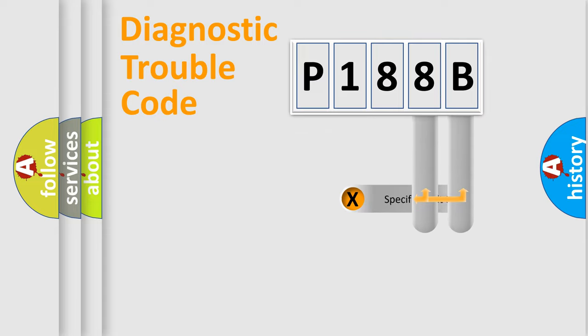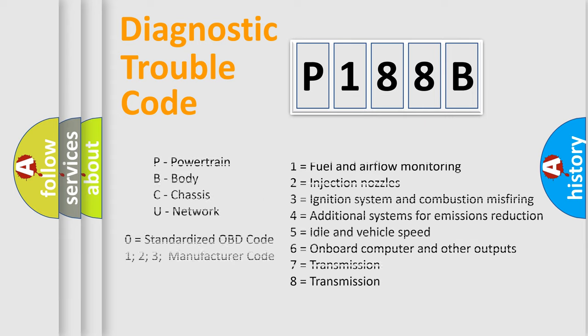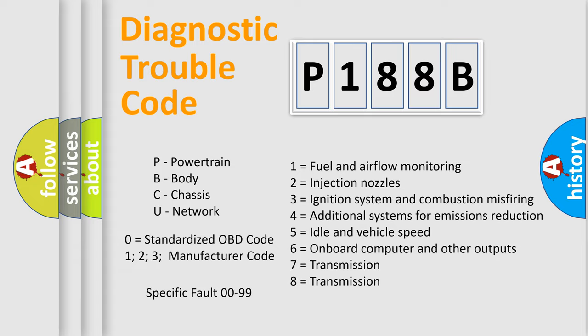Only the last two characters define the specific fault of the group. Let's not forget that such a division is valid only if the second character code is expressed by the number zero.